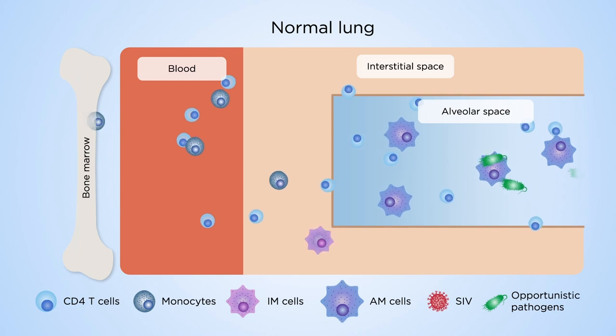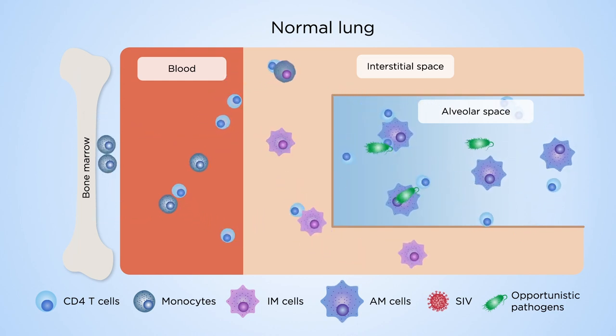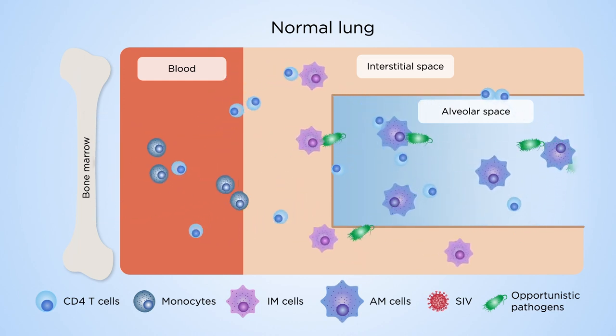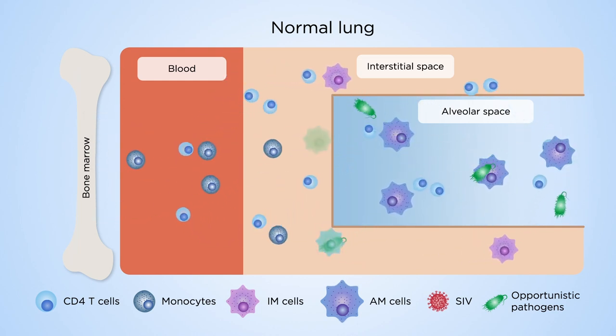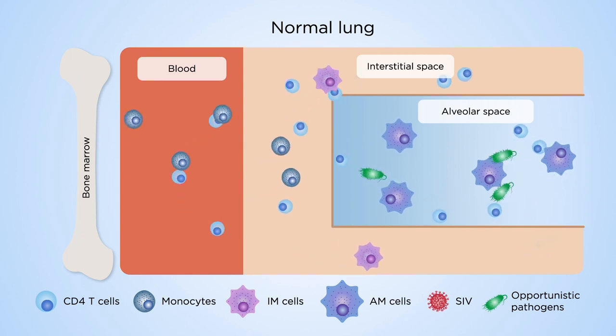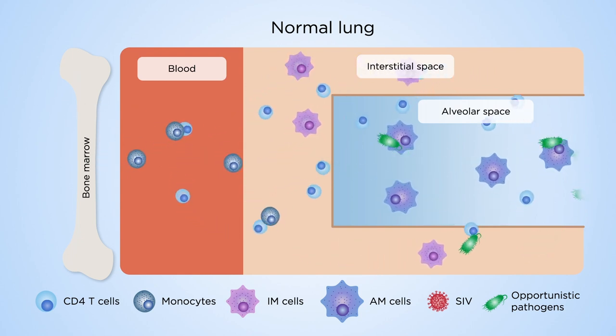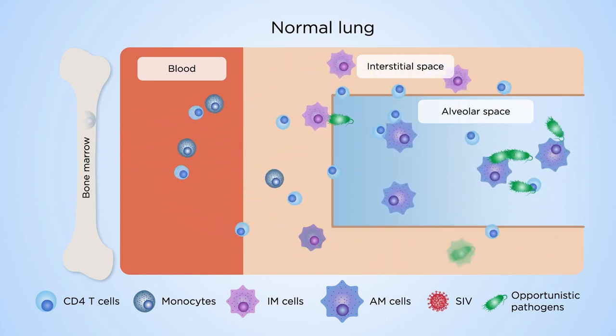During steady state, monocytes leave bone marrow, enter the blood, and traffic to tissues. In the lung, monocytes differentiate into interstitial macrophages and destroy pathogens.